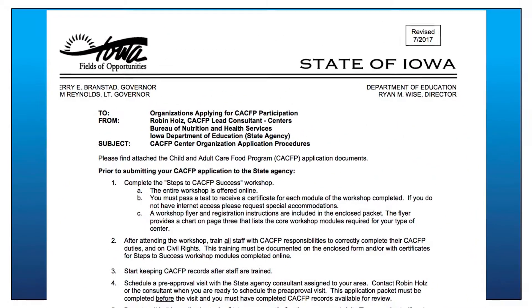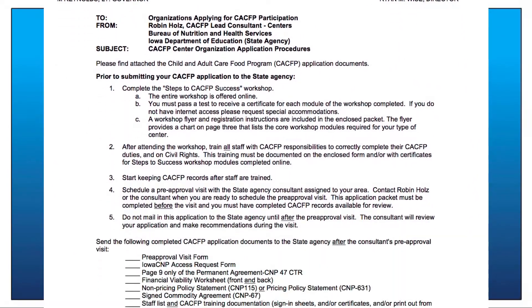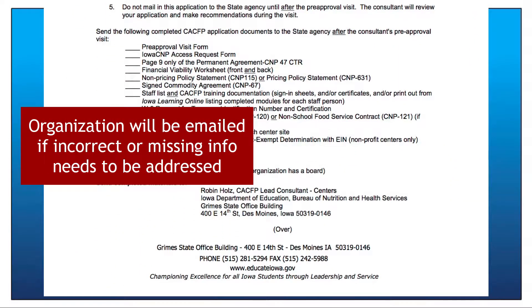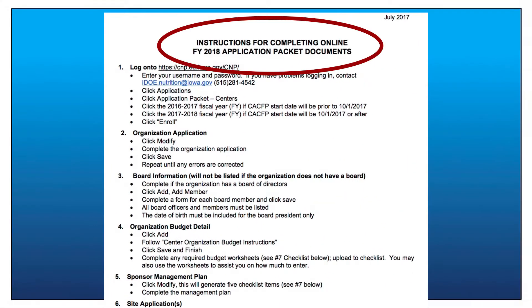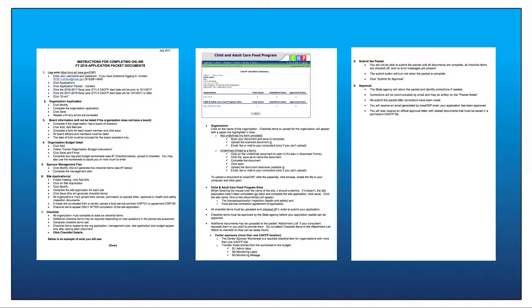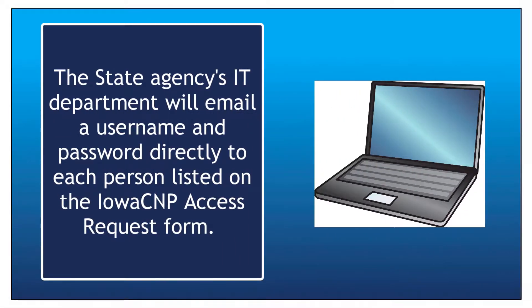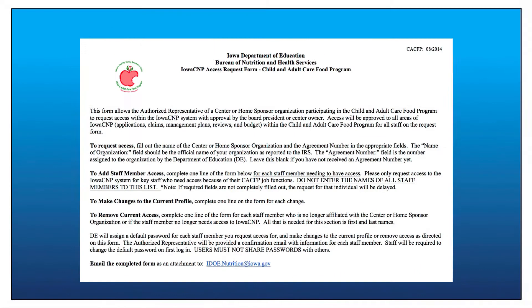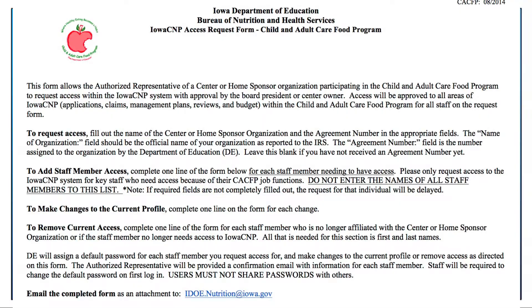After submission, the application packet will be reviewed and the organization will be emailed by the state agency if any incorrect or missing information needs to be addressed. This email will also include instructions for completing the online phase of the application. The state agency's Information Technology Department will email a username and password directly to each person listed on the Iowa CNP Access Request Form.